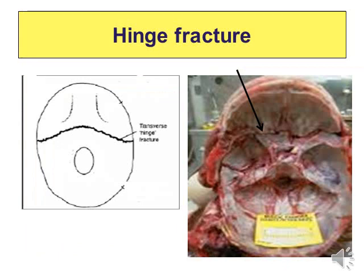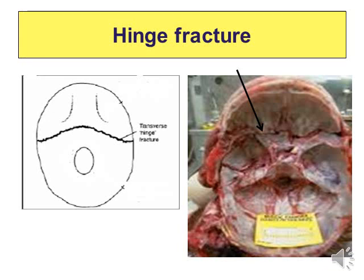The hinge fracture occurs in the base of the skull but starts in the vault; it is common in motor vehicle accidents, especially motorcyclists. It begins in the vault and runs through the base, separating the base into two parts. A diastatic fracture is another type occurring in children before suture closure; it runs along an unfused suture and separates the two bones.